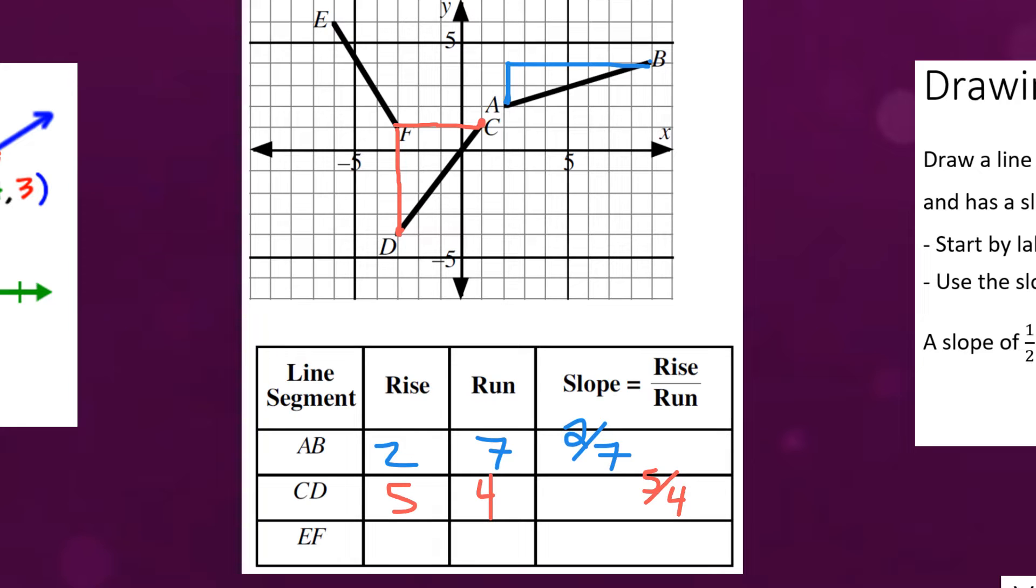Okay now for the last one the line segment from E to F. Now this is an example of where the rise is going to be negative because it's actually going down. One two three four five. So it's negative five. And our run is one two three. So in that case our slope is negative five thirds.